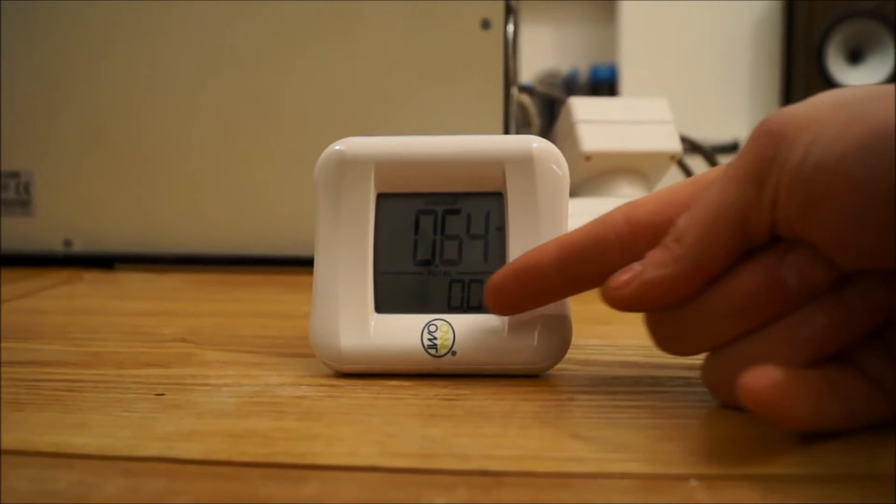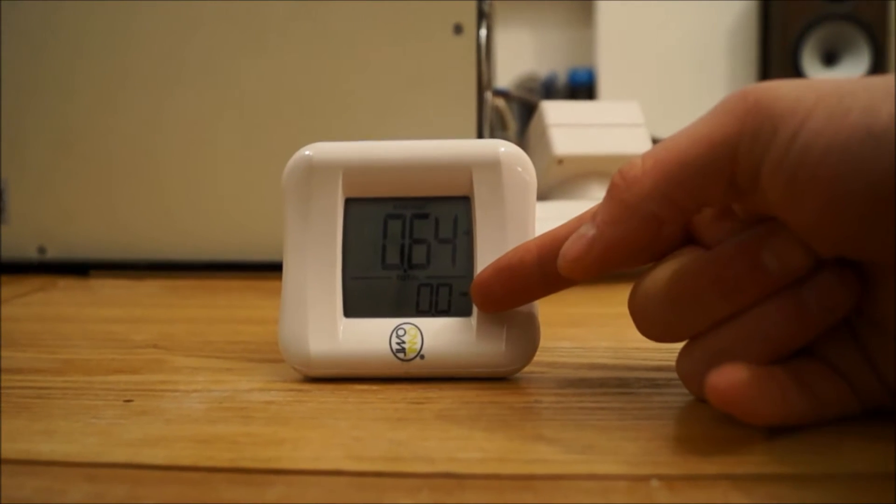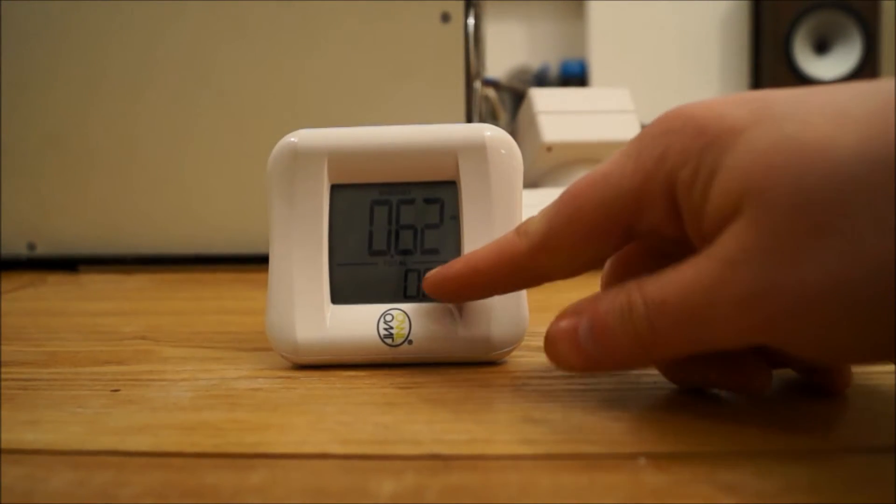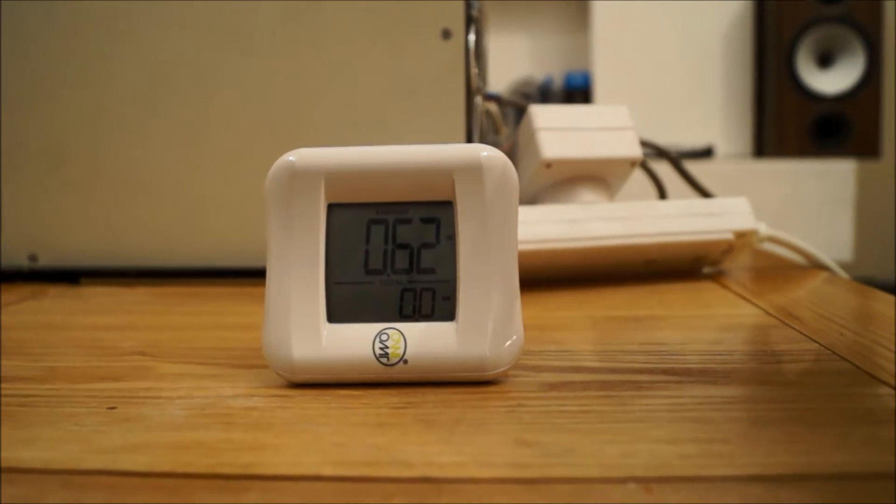This is very handy for when you are going completely off grid because then you can see a running total of what you've spent so to speak. For example, if you know that you can spare a kilowatt a day, you can keep an eye on this. And when the meter eventually gets to a kilowatt, then that's when you can switch everything off.